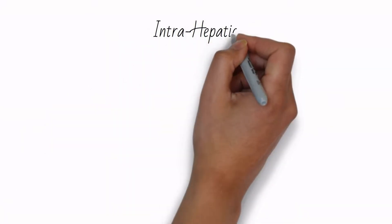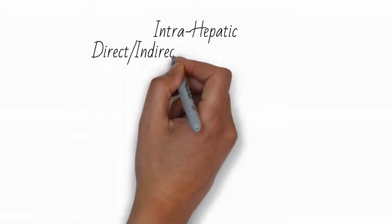Intrahepatic jaundice can be further subdivided into direct and indirect hyperbilirubinemia.